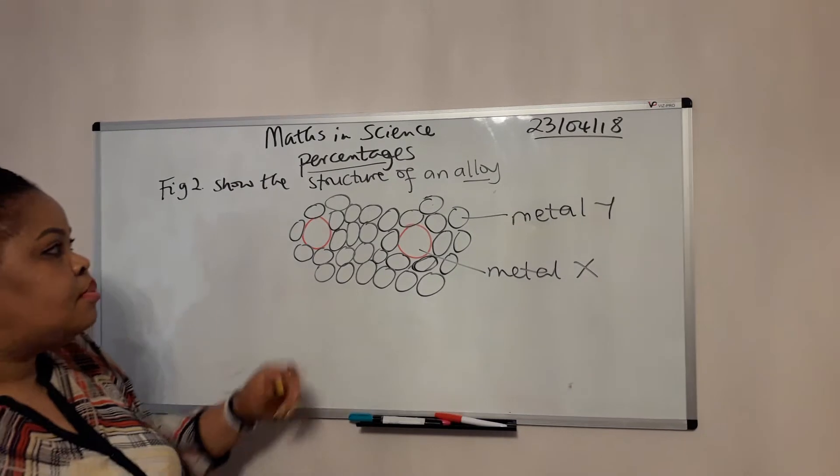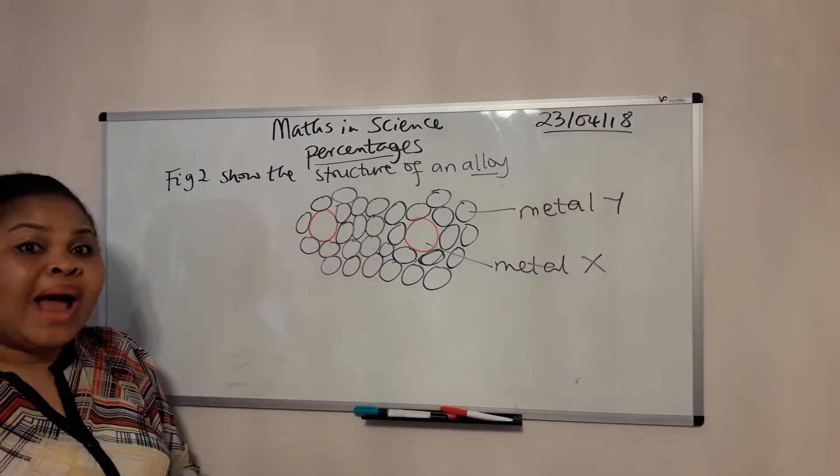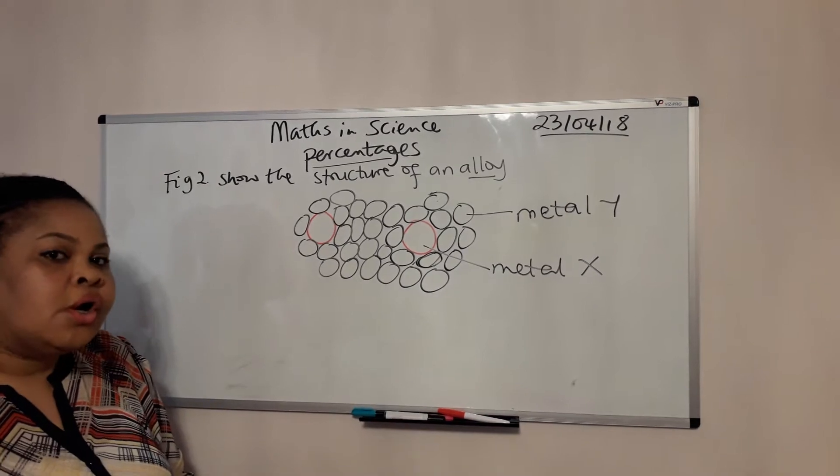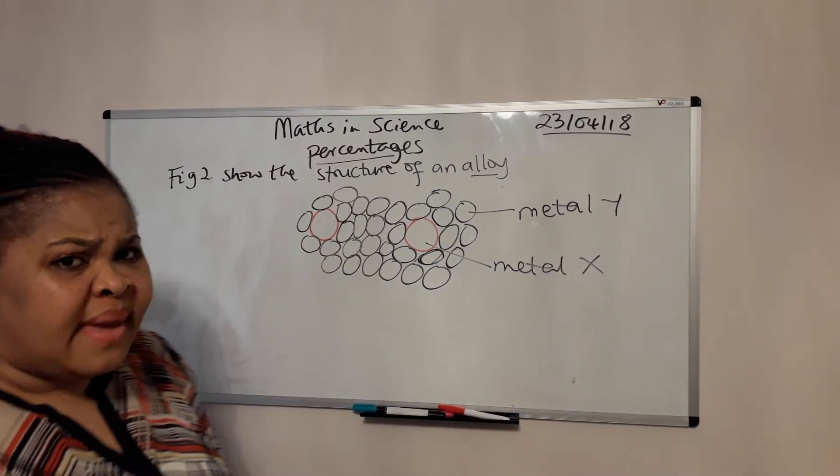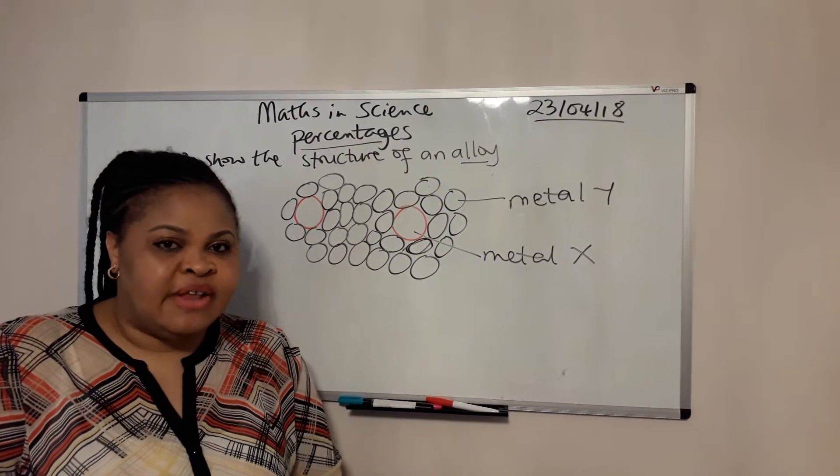A student said to me, what's an alloy? Just as a quick overview, an alloy is a mixture of two or more metals, sometimes mixed with other materials. That's an alloy - it's a mixture of metals. You can also mix other non-metals with it sometimes to make it strong.